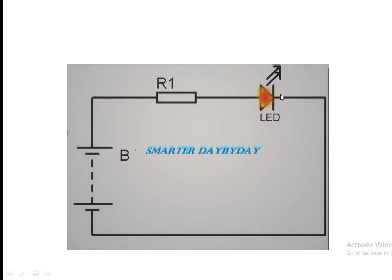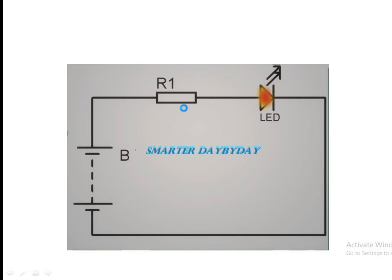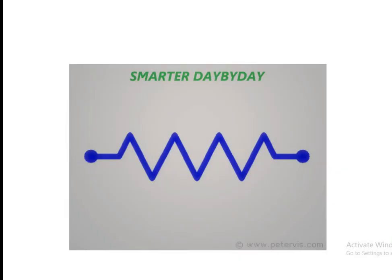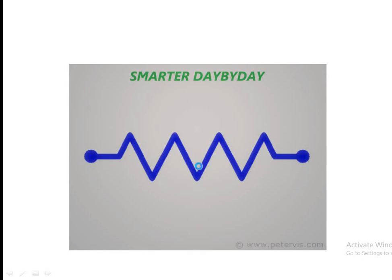Let me represent a physical component. That is the resistor symbol. You usually see in the schematic this zigzag symbol that represents the resistor, but it's not important that we always use this symbol for resistor.